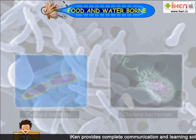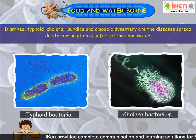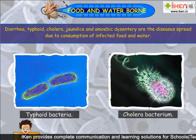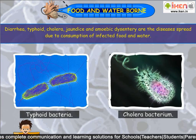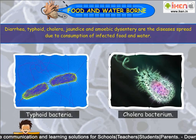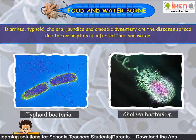Food and Water: Diarrhea, typhoid, cholera, jaundice and amoebic dysentery are the diseases spread due to the consumption of infected food and water.